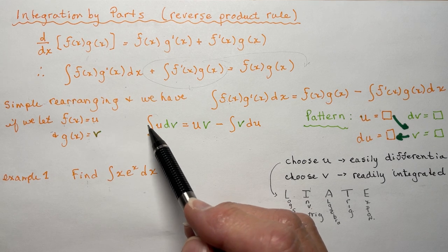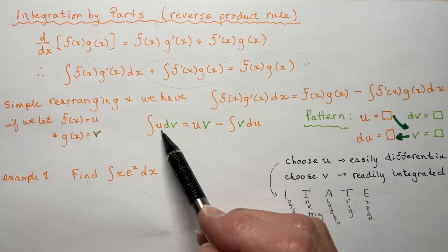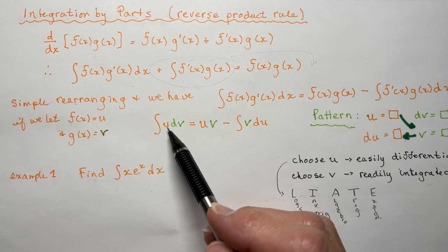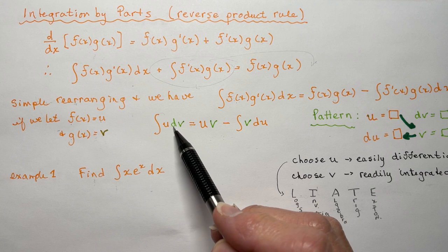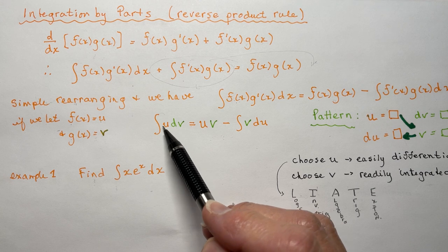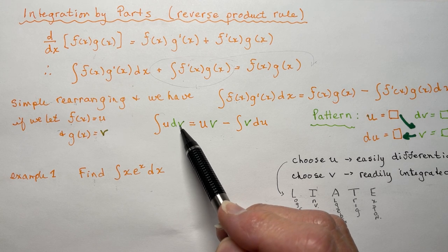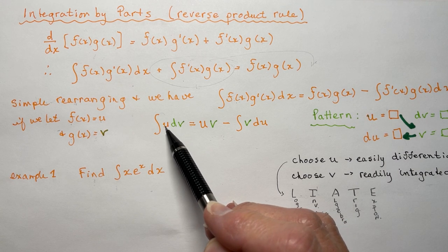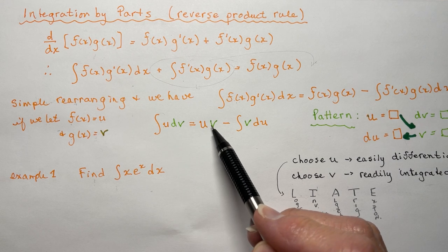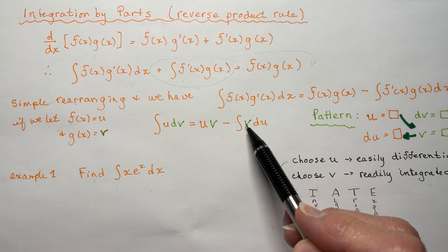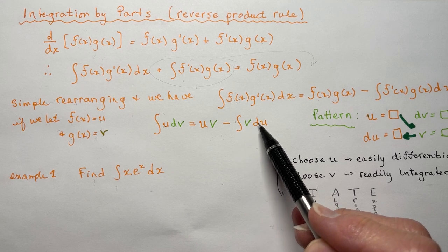This is probably what you're more familiar with seeing from your lesson. So it says that the integral of u·dv — identifying one part as the derivative and one as not the derivative — is equal to u·v minus the integral of v·du.